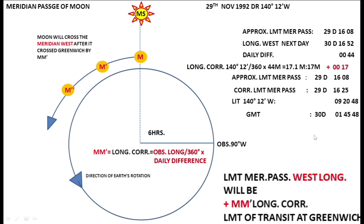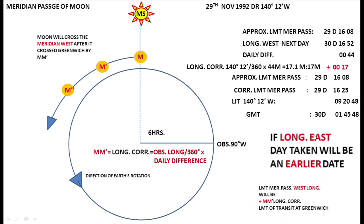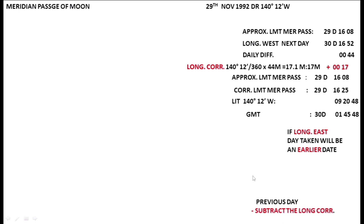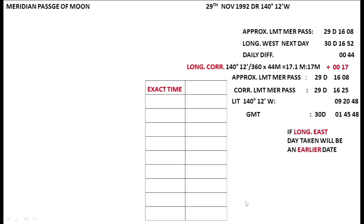The important thing to remember for the Moon is that we must apply a longitude correction. For east longitude, the Moon has already crossed the eastern meridian before reaching Greenwich, so we take the earlier date and subtract the correction, because the transit occurs before the Greenwich passage.